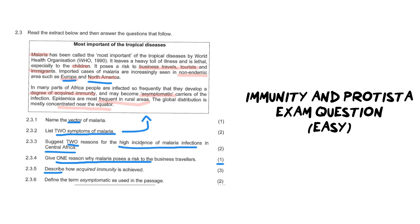Number five: describe how acquired immunity is achieved. This is for three marks. It's a nice easy question — all you need to do is tell me how you get acquired immunity, and it's in three steps. The word describe means you need to tell me how, why, and when or where it happens. So: how do you acquire immunity, when does it happen, and where does it happen?